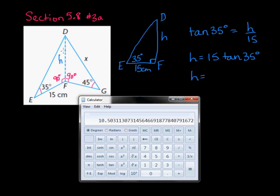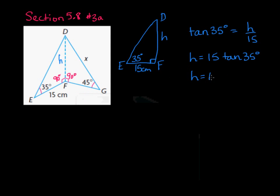Because we're going to use this value of h in another calculation, we should keep more decimal places — so h ≈ 10.503113. This way we maintain more accuracy in our final answer.